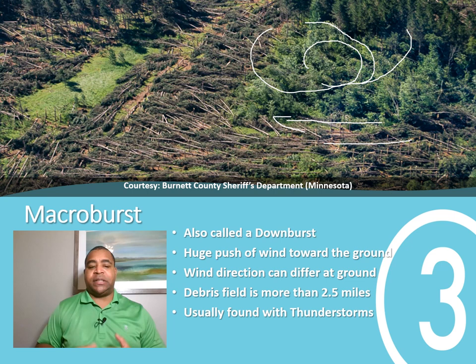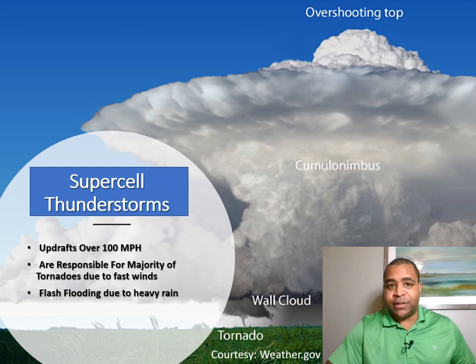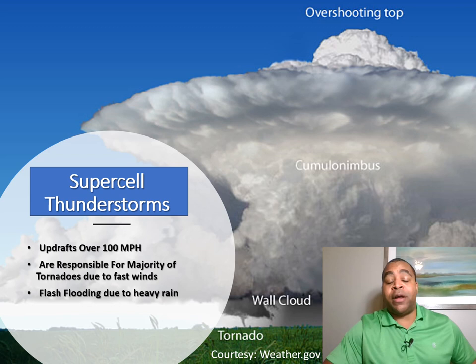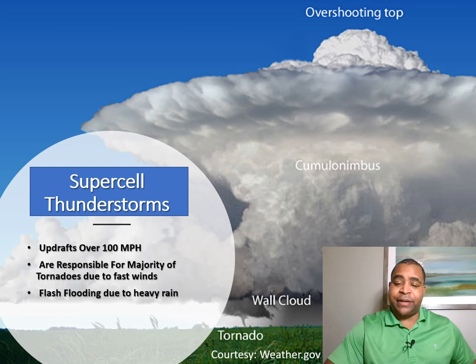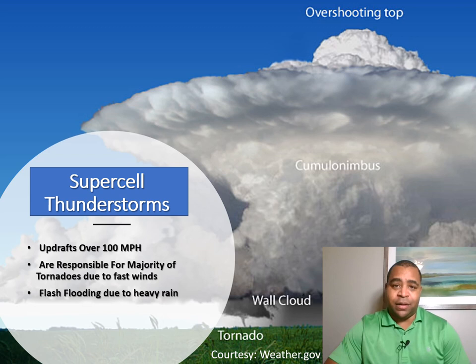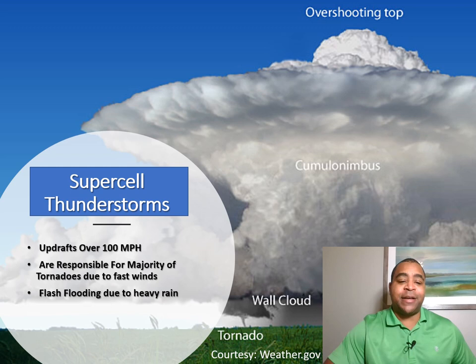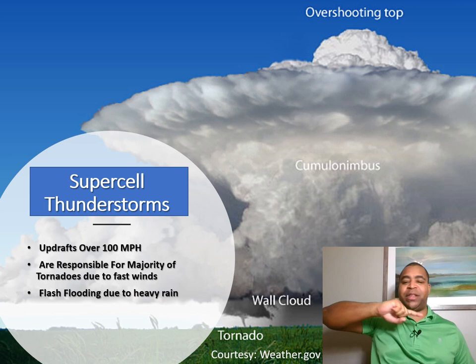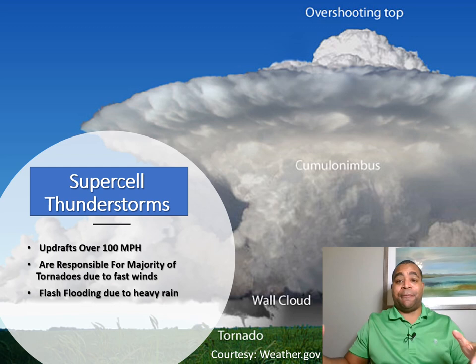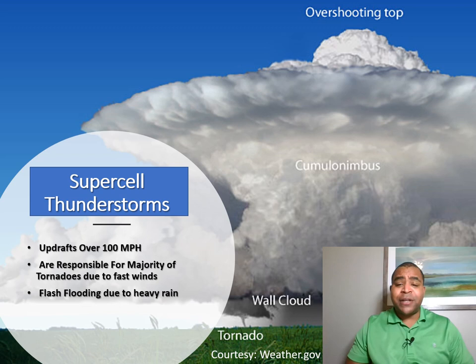The last type of thunderstorm I'm going to talk about today is the absolute worst type — supercell thunderstorms. These usually leave behind a lot of damage and are really, really dangerous. They are beautiful to see but not when you're under them. Supercell thunderstorms usually have updrafts of more than 100 miles per hour. They're responsible for the majority of tornadoes we see, with those really fast upward winds creating downdrafts that also produce hail and, yes, tornadoes. We can also get flash flooding with these as well.